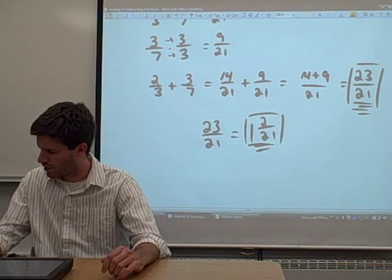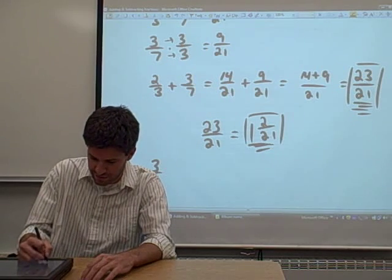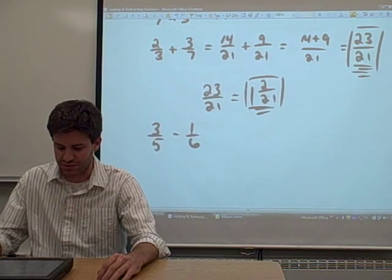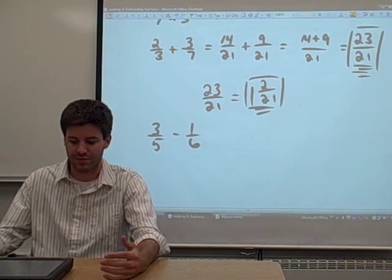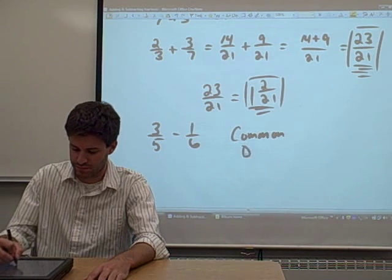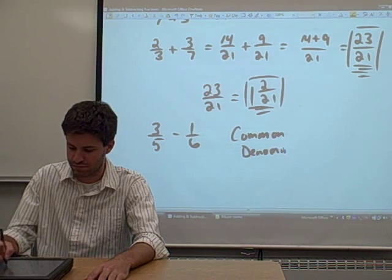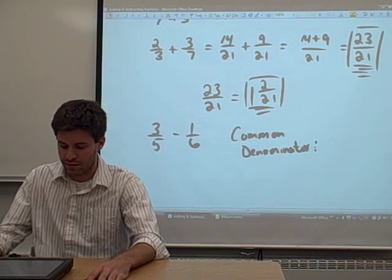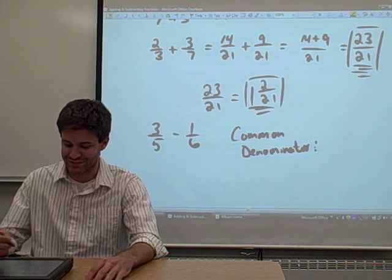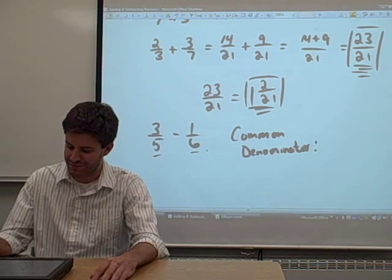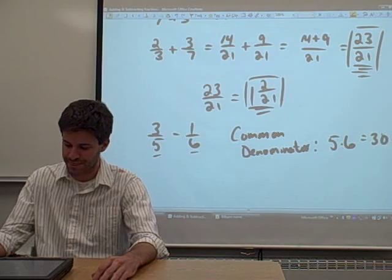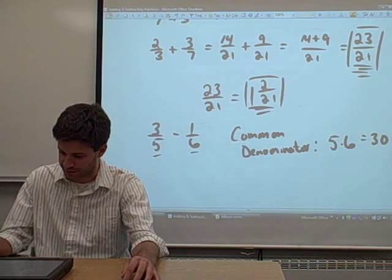Now the other problem that I asked you to do was 3 fifths minus 1 sixth. Let's try to do that subtraction. Again, we have to find a common denominator. One technique for finding common denominator, again, is just multiplying the two denominators from a problem. 5 and 6, 5 times 6 equals 30. So that'll work for our common denominator.